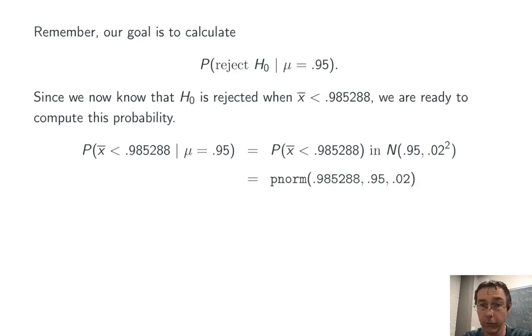And this is just a straightforward normal calculation. If we're using R, for instance, we can do this with the pnorm function. So it's a cumulative probability function. And the value that we're interested in is 0.985288. Again, the mean is 0.95 and standard deviation is 0.02. And when we do that calculation, we get a probability of 0.96.